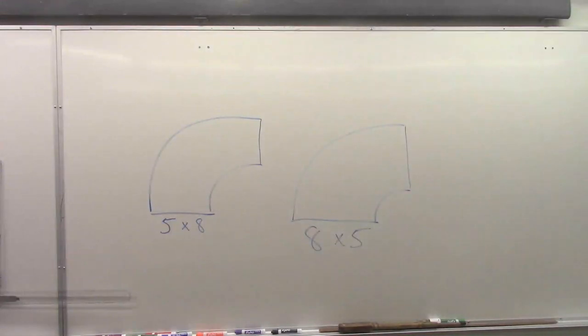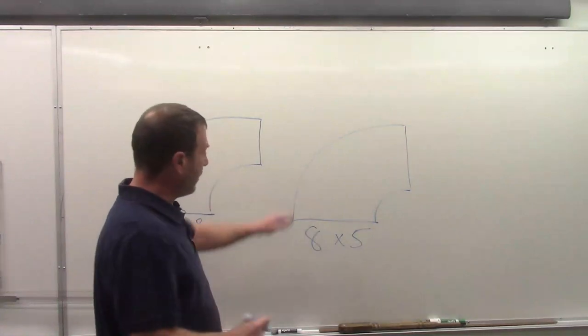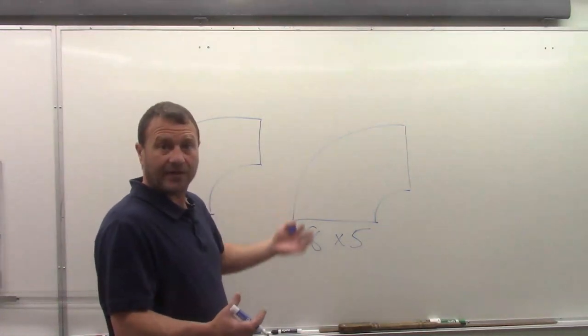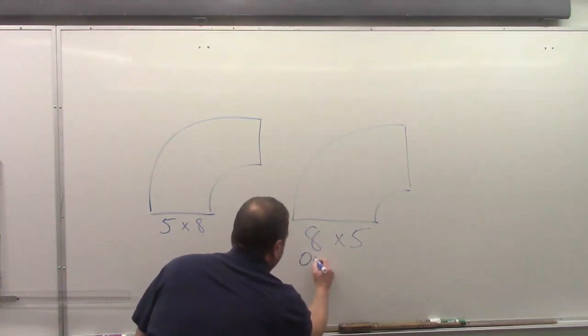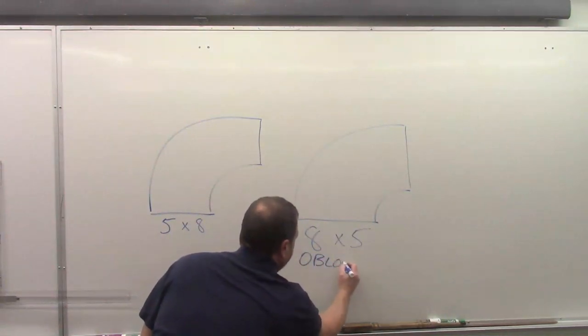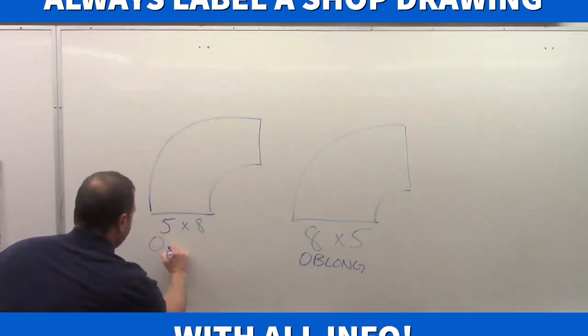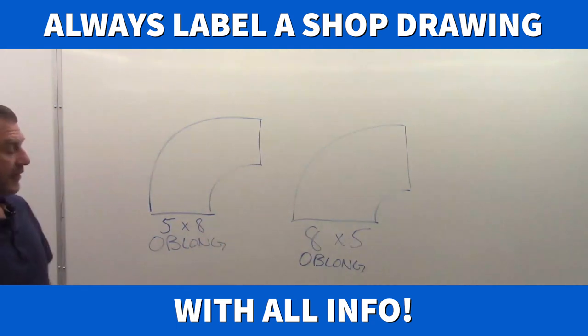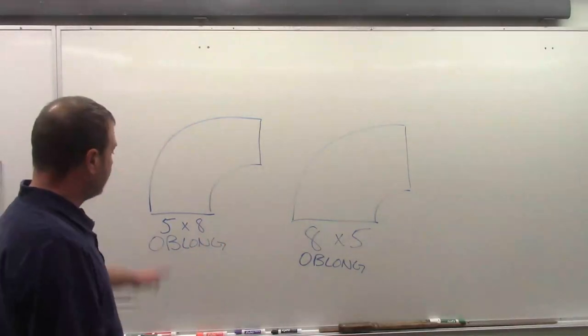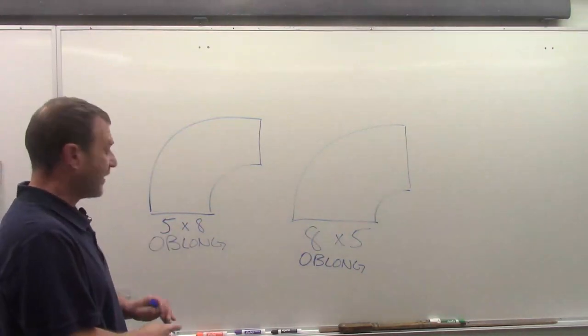So a couple of things off the bat. If you're drawing yourself, if you're making a shop drawing to give to someone else, we always want to indicate that these are in fact oblong. And the only way we can do it is by writing it in. So we get that indication there to tell the person that these are not rectangular ducts.